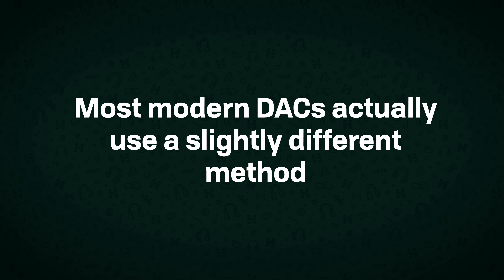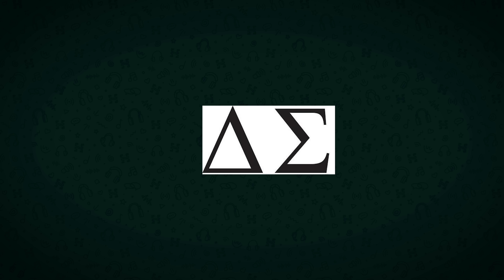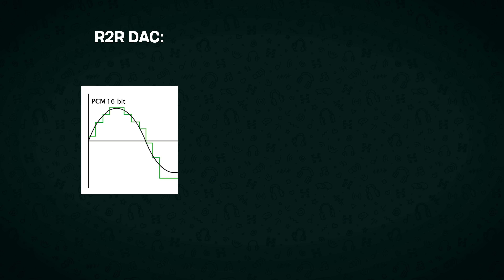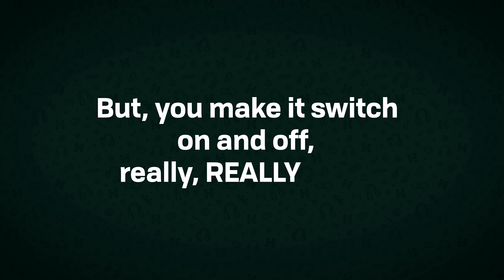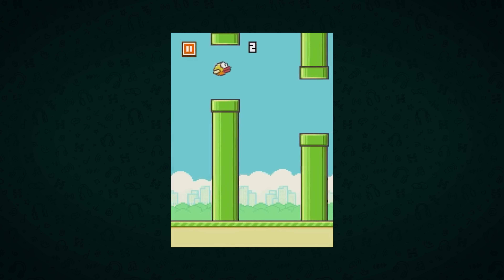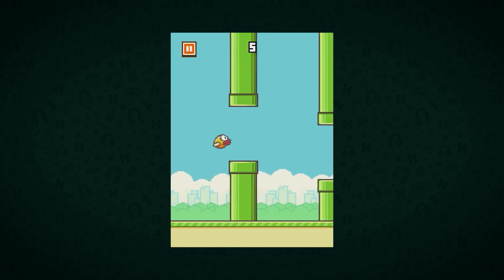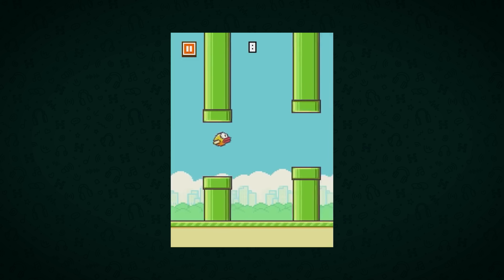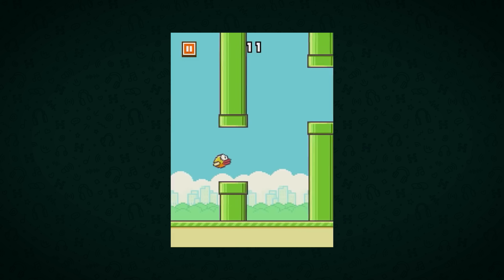Most modern DACs actually use a slightly different method to this, as making an accurate R2R DAC in the real world is quite hard, so they use something called delta sigma. The basics of this is that rather than having a circuit that can output all of the different potential voltages you need, you have one that can only output a few — possibly even being just one bit, meaning you can only ever be on at 100% or off at 0% — but you make it switch on and off really, really fast and average out the result. Think of this as the Flappy Bird method. Rather than dragging your finger to tell the signal exactly where you want it to be at any given time, like an R2R DAC, you tap and pulse the full 100% go-up instruction and modulate how frequently you tap to control the actual height of the bird.